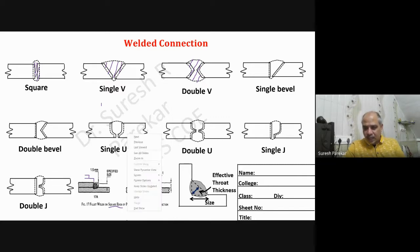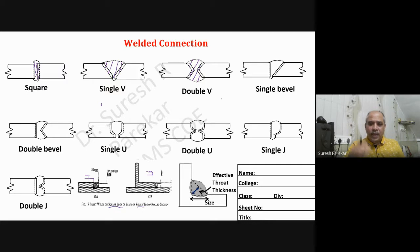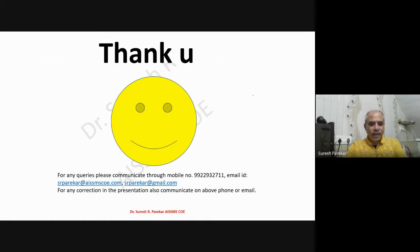You also have to show the name plate with all lines, including your name, college name, class, division, sheet number, and title. This completes what you have to show in your first sheet. Thank you. In the next session, we will see sheet number two.